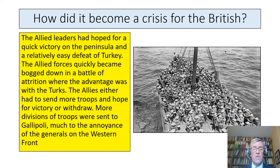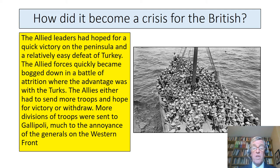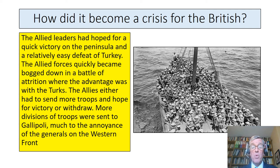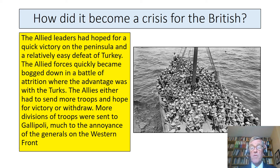How did it become a crisis for the British? It's something called mission creep. The Allied leaders had hoped for a quick victory and a relatively easy defeat of Turkey, but it quickly became bogged down in a war of attrition, and the Allies were forced to send more and more troops or withdraw. More divisions were taken that could have gone to the Western Front, and so those generals were particularly annoyed.